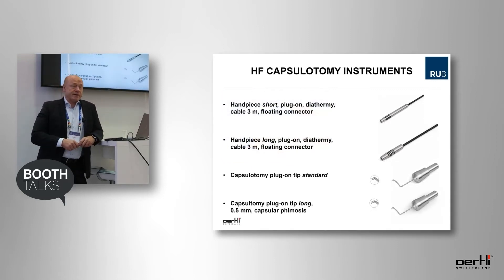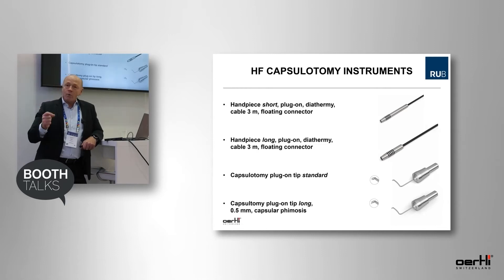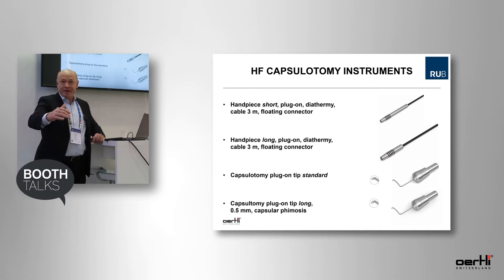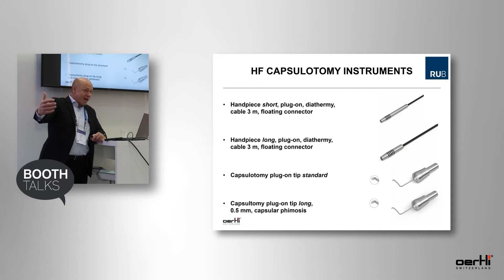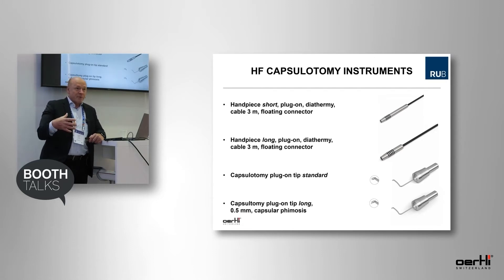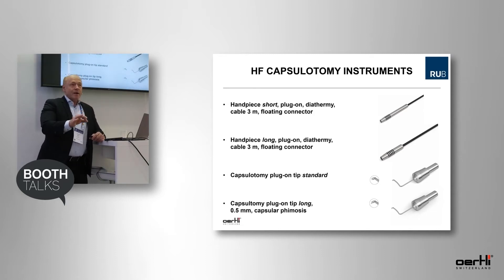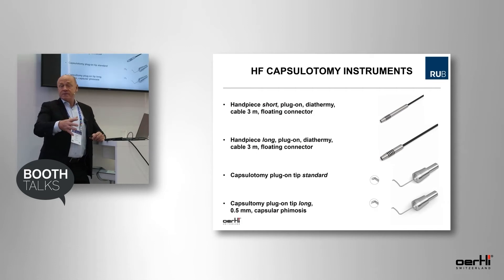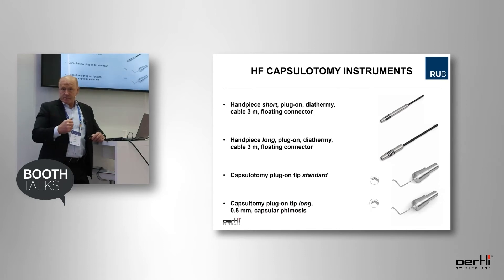I'm doing pediatric cataract and everybody knows how difficult it is to do an anterior capsulorhexis in a pediatric eye. You always tend to aim as small as possible, because you will always end up too big. Even with the femtosecond laser — and that's the reason why we developed the Bochum formula. With this technology, the nice thing is you don't need that formula, because you can start with a very small capsulotomy and then enlarge it as you want, always having in mind there are far greater retraction forces in pediatric eyes than in age-related cataracts.